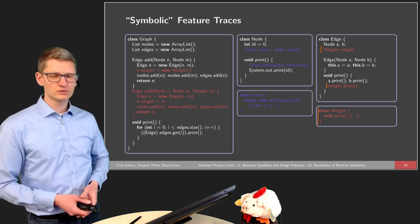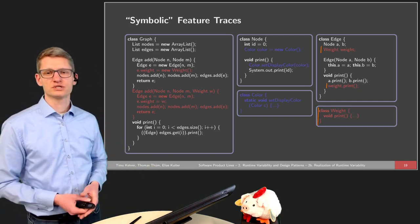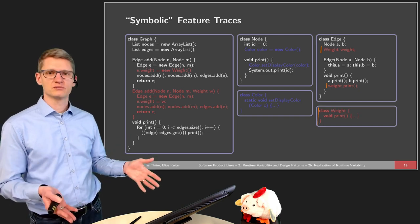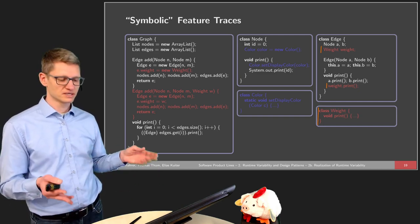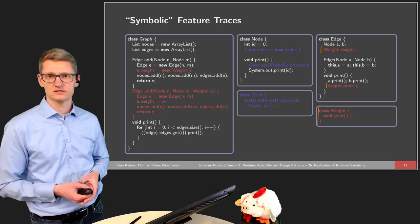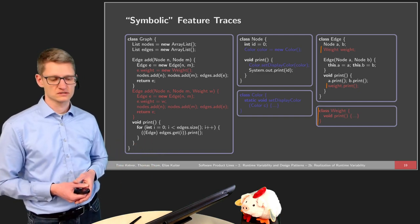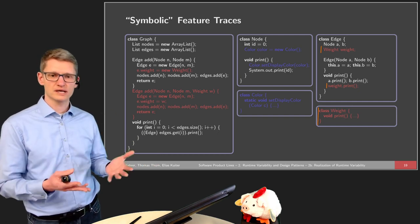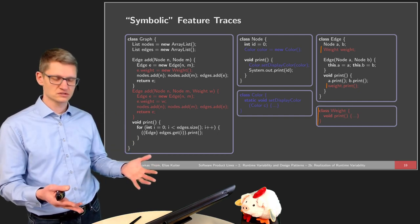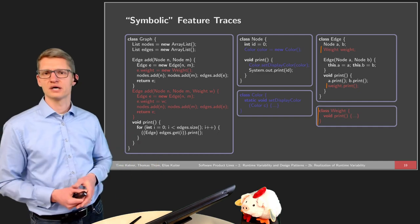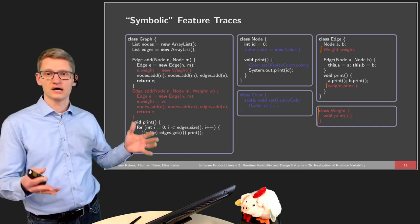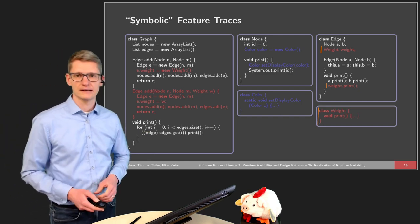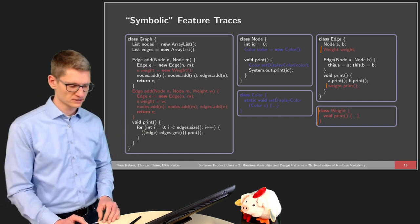We have written 'symbolic feature traces' on top of the slide because in a typical single implementation you don't have these feature traces. We just made up these feature traces for you to visualize where features are in source code. It's actually hard to identify features in a larger code base. We call them symbolic as we only colored them here for the purpose of this lecture.